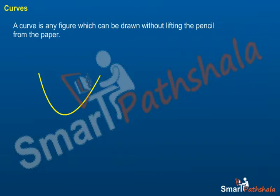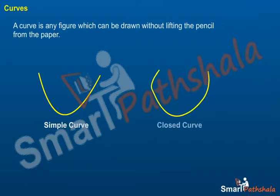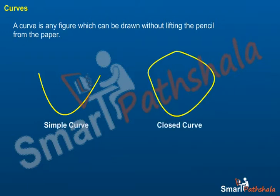3. If a curve does not cross itself, then it is called a simple curve. 4. A curve is said to be closed if its ends are joined; otherwise, it is said to be open.